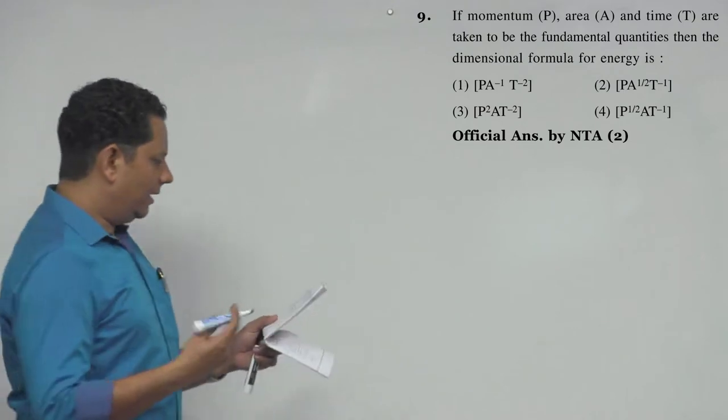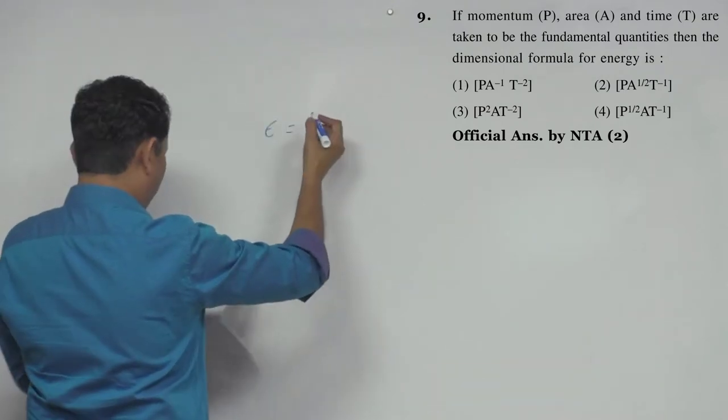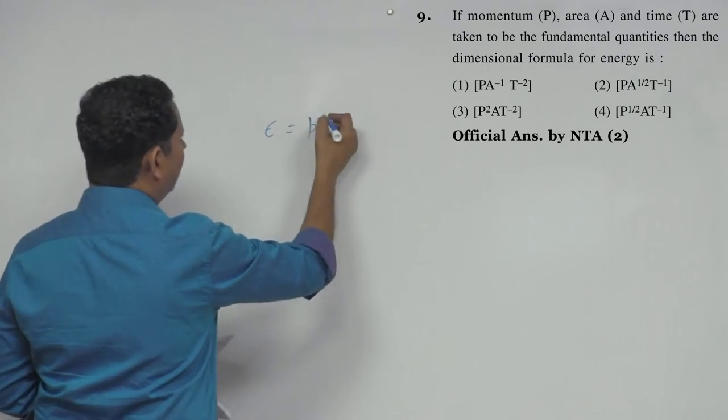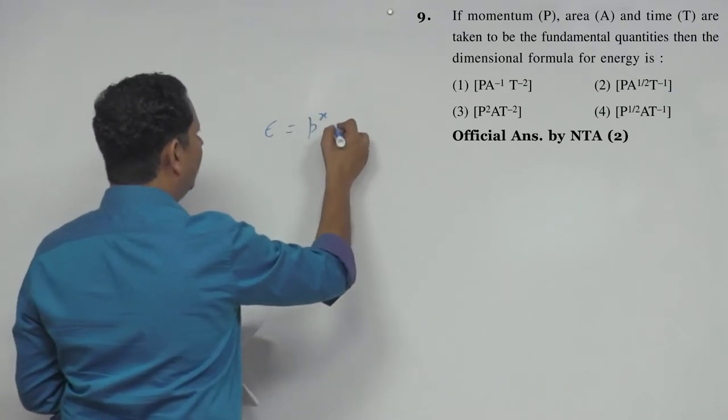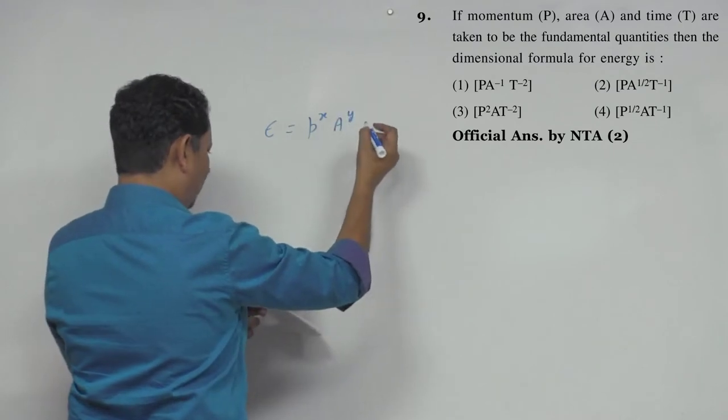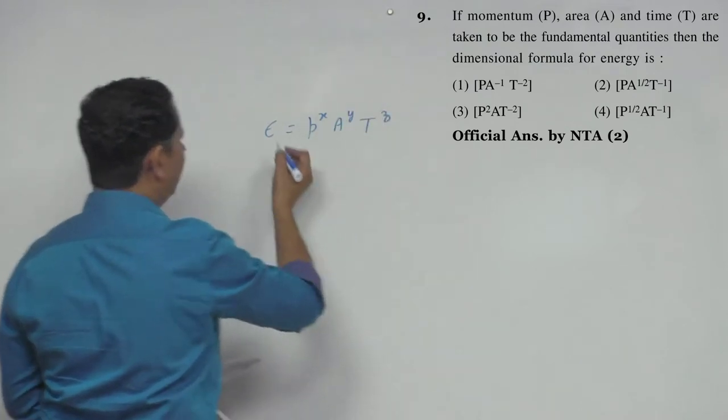Again, let's say energy E, let's say this is P to the power X multiplied by area to the power Y and time T to the power Z.